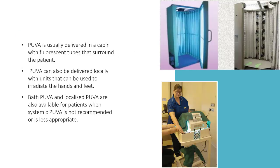PUVA is usually delivered in a cabin with fluorescent tubes that surround the patient, as depicted in the picture. PUVA can also be delivered locally with units that irradiate the hands and feet. Bath PUVA and localized PUVA are available for patients when systemic PUVA is not recommended or is less appropriate.